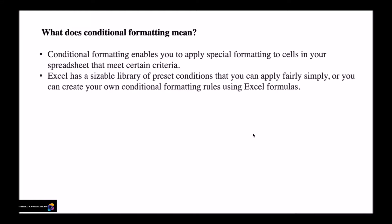Before we go into how to use conditional formatting in Excel with examples, we should learn what it is. Conditional formatting enables you to apply special formatting to cells in your spreadsheet that meet a certain criteria. It will help you find the exact match for whatever category you're looking for. For example, if you have a huge dataset and want to find only the entries that fall on Tuesday, it will highlight all of those for you.